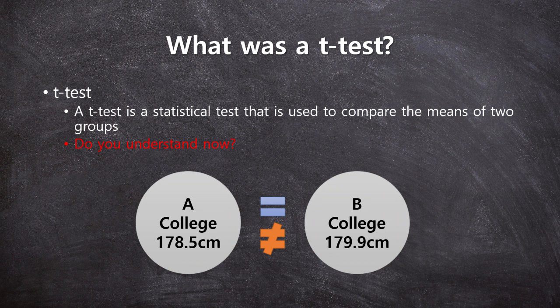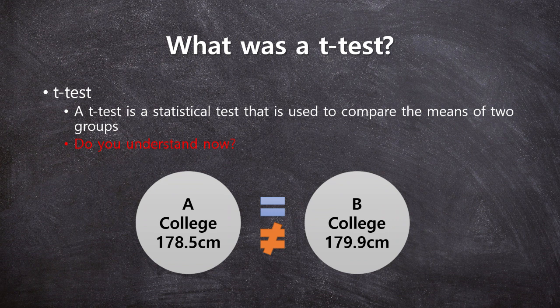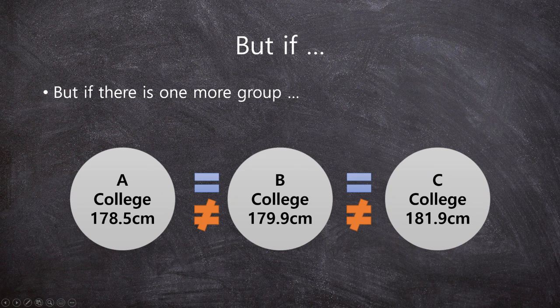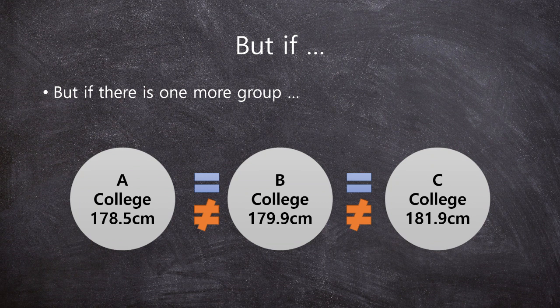That is our question. In this case, we will use the t-test, right? But if there is one more group, likewise college C, as you can see here, we have three groups: college A, B, and C.